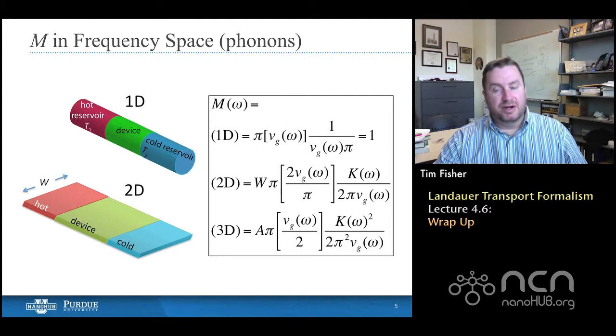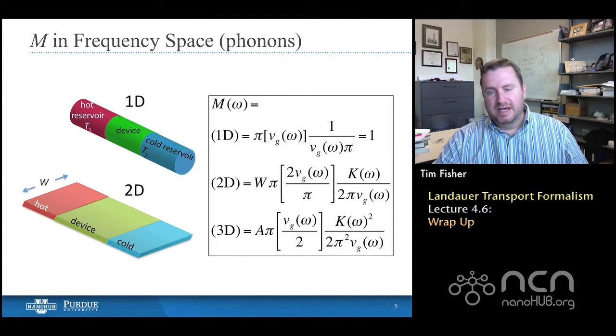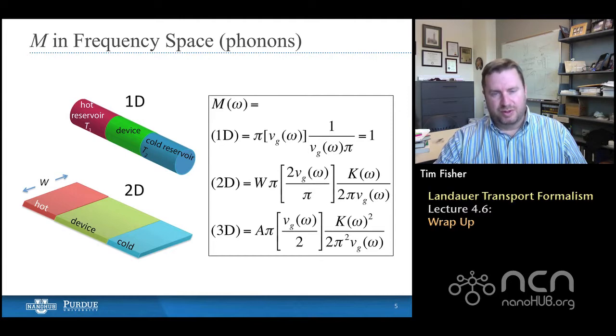And the reason we don't do it is really more educational at this point. The bracketed terms in all of these equations, 1D, 2D, and 3D, represent the average velocity in the direction of interest. And that's a nice way of thinking of it. The other terms have to do with the dispersion relation. And so we'll use that result in a bit to express some of the conductance results.